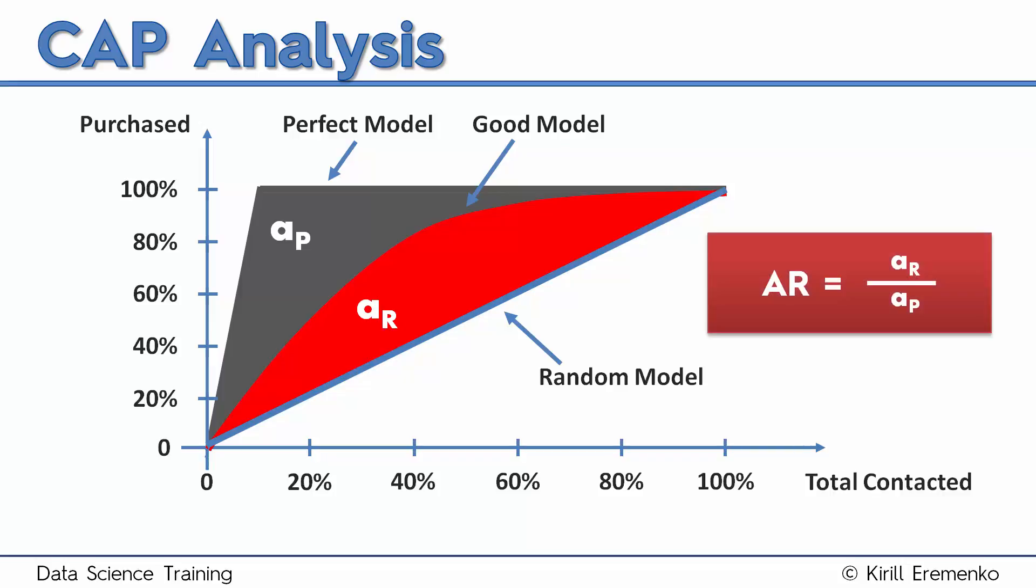Then you need to divide one by the other, so you need to divide AR by AP, and then this ratio that you get is obviously between 0 and 1, and the closer this ratio is to 1 the better. The further it is away from 1 and closer to 0 the worse.